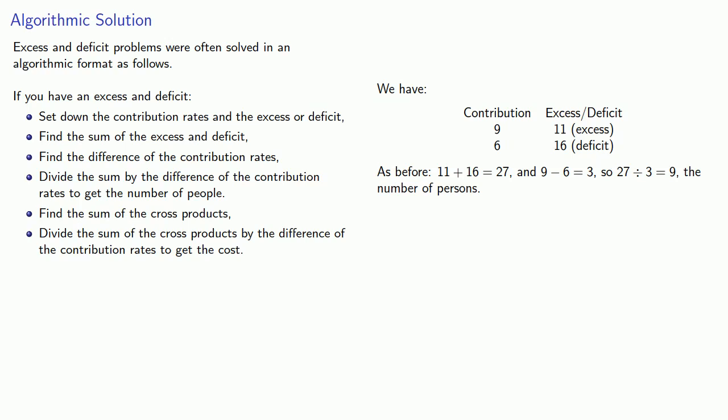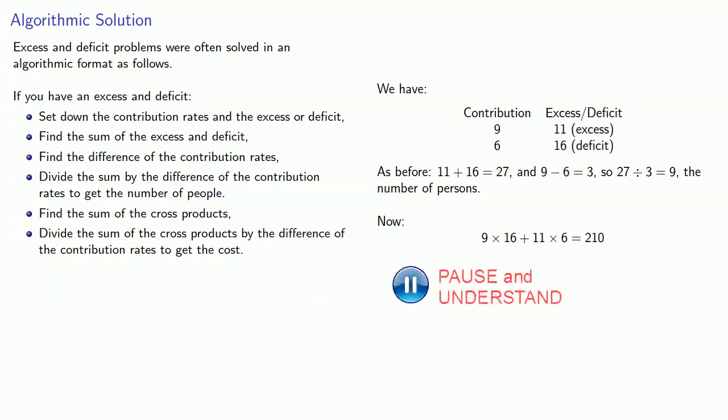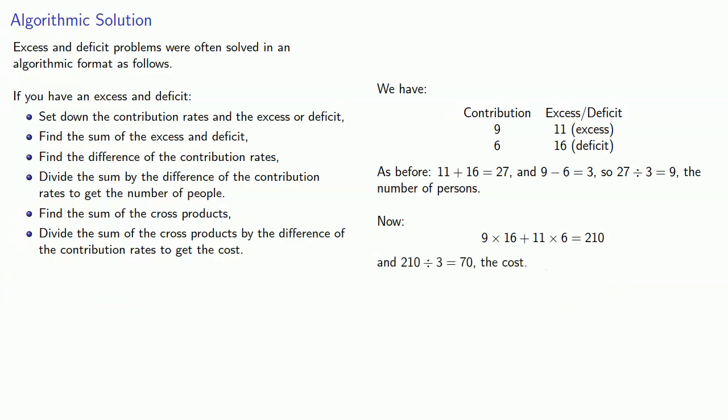The cross product is interesting: that's the product of nine by sixteen added to eleven by six. Adding the sum of the cross products gives us two hundred and ten. And two hundred and ten divided by three is seventy — the cost.